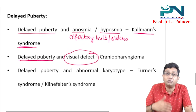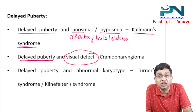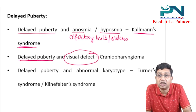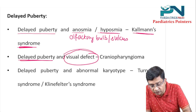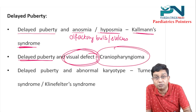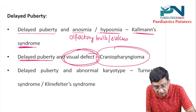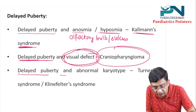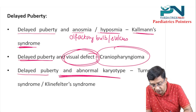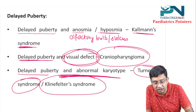If delayed puberty is associated with a visual defect, think of craniopharyngioma, which arises from Rathke's pouch and causes hypopituitarism. Defect in smell is Kallmann syndrome; visual defect is craniopharyngioma. If there is delayed puberty with an abnormal karyotype: female is Turner syndrome, male is Klinefelter syndrome.